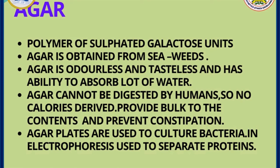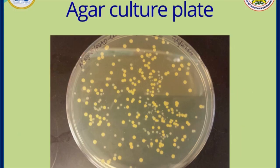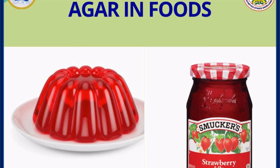Agar is a polymer of sulphated galactose units obtained from seaweeds. It is odorless and tasteless and has the ability to absorb a lot of water. Agar plates are used to culture bacteria in microbiology. Since agar is not digested by humans and no calories are derived from it, it is used as bulk to prevent constipation.